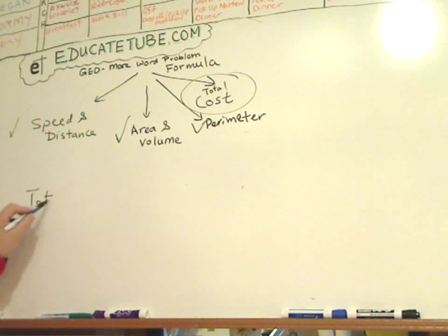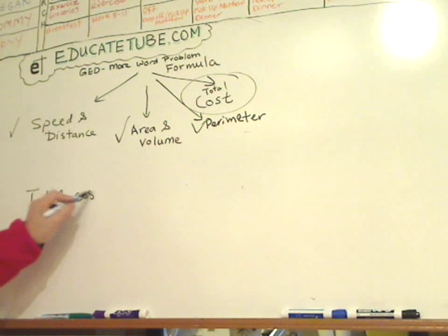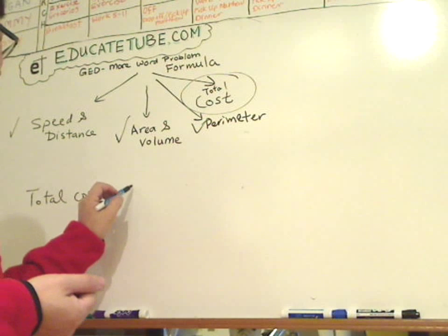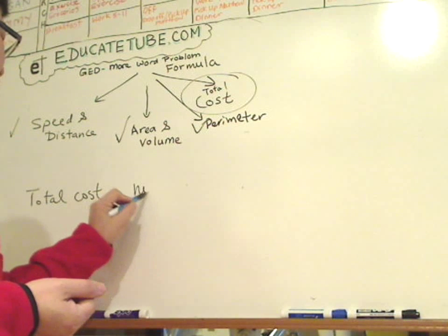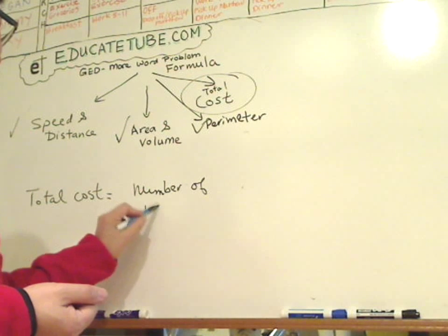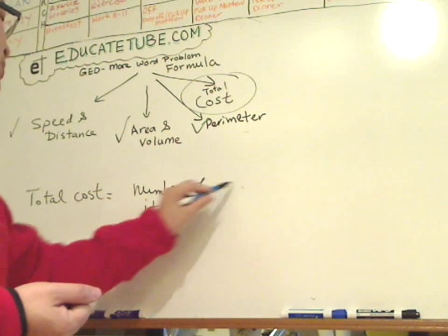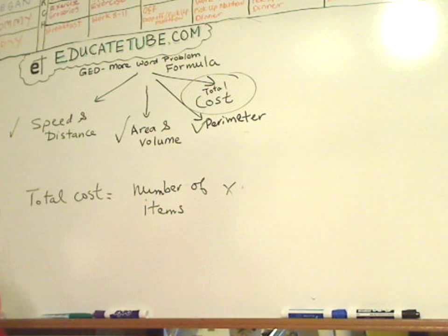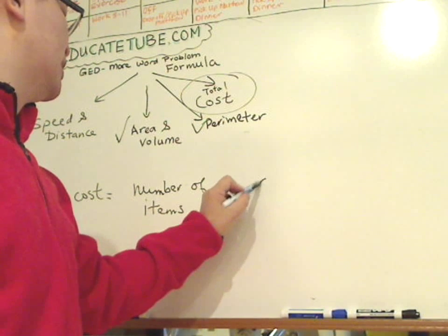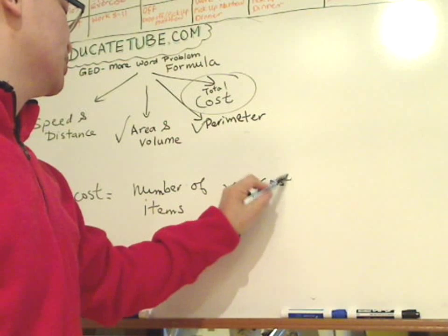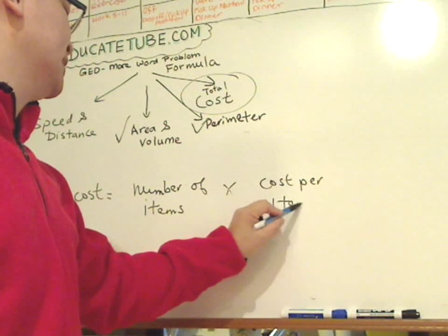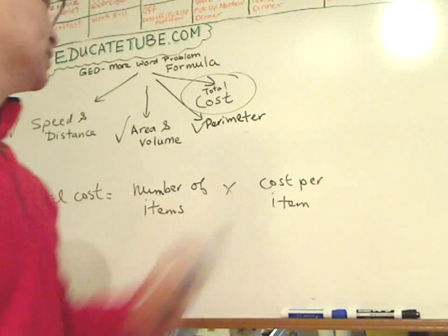The total cost formula is the number of items you have multiplied by how much it costs — the cost per item, per unit as well.